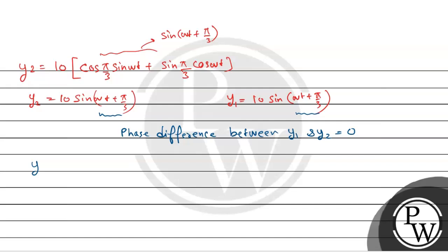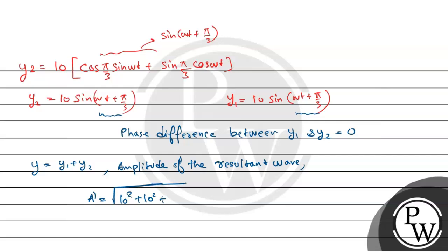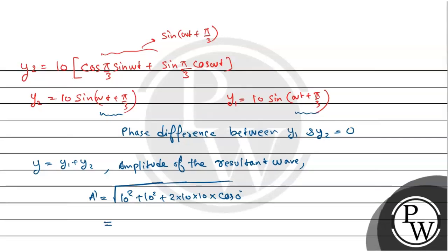The resultant wave y equals y1 + y2. The amplitude of the resultant wave A' equals root over of 10² + 10² + 2×10×10×cos(0°), which equals 10 + 10 = 20. So the resultant amplitude is 20 cm.